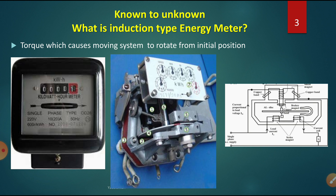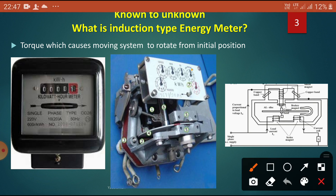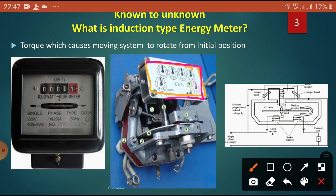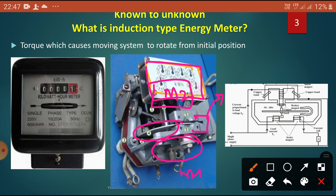What are the systems here? This is the first — the recording system. You can observe there is a magnet provided here. Nearby, there is a U-shaped magnet — that is the braking system. The moving system is the aluminum disc, which you can observe here. The driving system: here is one magnet at the bottom — that is the series magnet M1 — and here is the shunt magnet, M2.